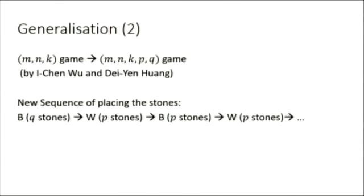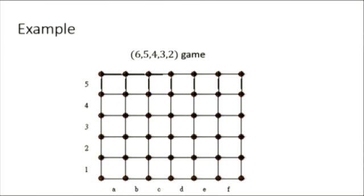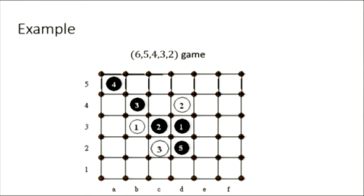The second step is to introduce two more parameters, p and q. In the first turn of black, he places a total of q stones on the board, and each subsequent turn involves p stones. So, here's an example. As you can see here, black wins because he's achieved a 4 in a row.